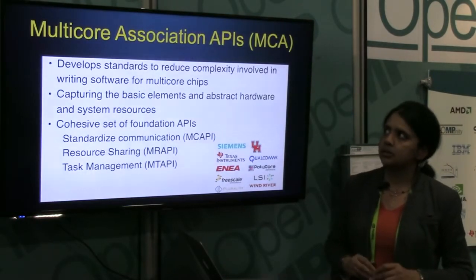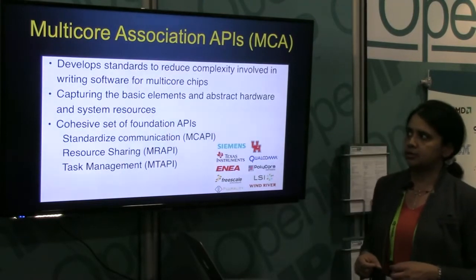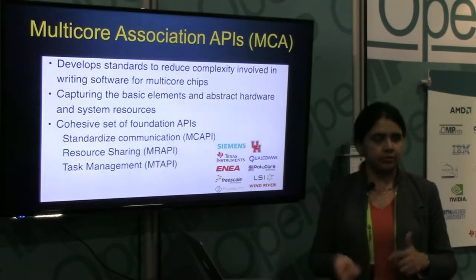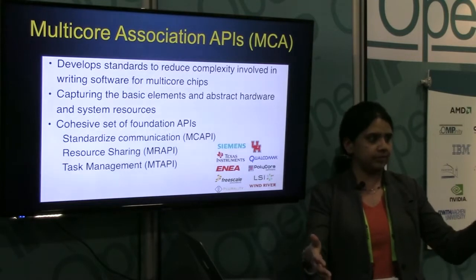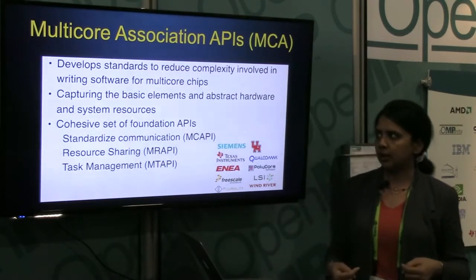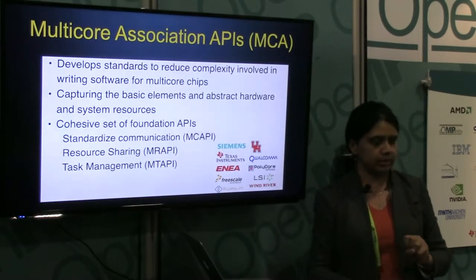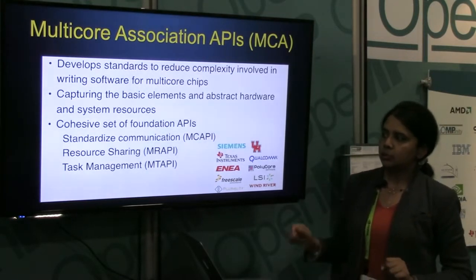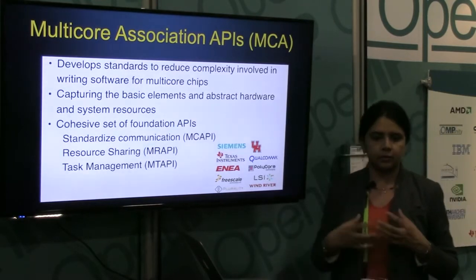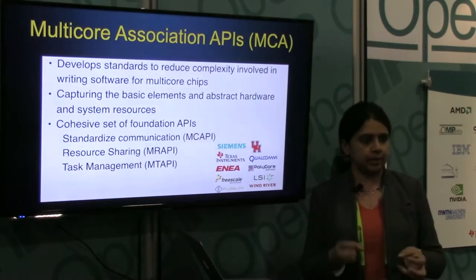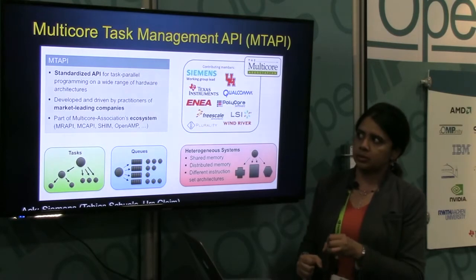Moving on to Multi-Core Association — this is also an industry standard designed to reduce complexity involved in writing software for multi-core chips. They have APIs for communication, resource management, and task management. Communication APIs handle communication between cores of different types on a single board, such as between CPUs and GPUs. Resource management lets you choose, say, three out of four cores to keep busy. This work focuses on task management, whose philosophy is very similar to OpenMP tasks but lighter weight, catering to embedded systems — decomposing an application into tasks, scheduling them, and prioritizing them.